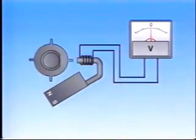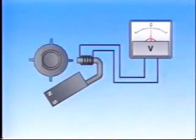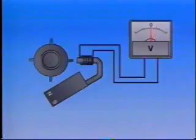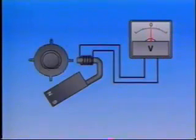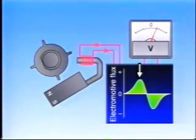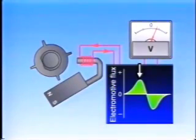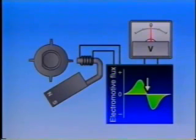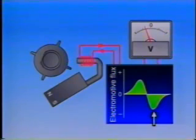The level of EMF generated depends on the relative positions of the rotor and pickup coil. When a rotor tooth approaches the pickup coil, the EMF increases. When the rotor tooth and the pickup coil are aligned, it becomes zero. When they move apart, a counter-EMF is generated.